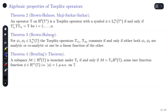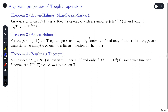Some interesting facts about Toeplitz operators: in general, multiplications by φ₁ and φ₂ commute on L²(Tⁿ), but when you compress them onto H²(T), they need not commute. Brown and Halmos gave a characterization of when Toeplitz operators commute: if and only if either both are analytic or both are co-analytic, or one is a linear combination of the other — φ₂ = αφ₁ + c.